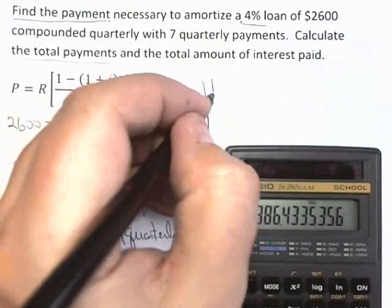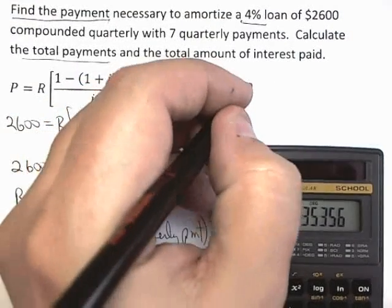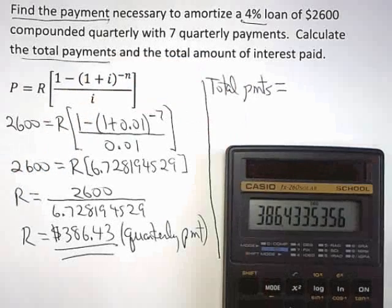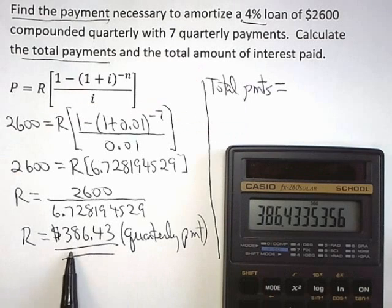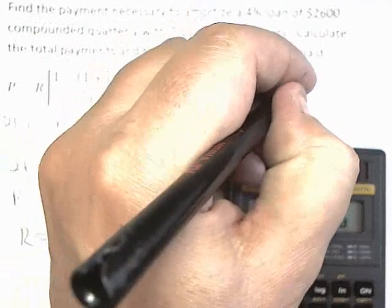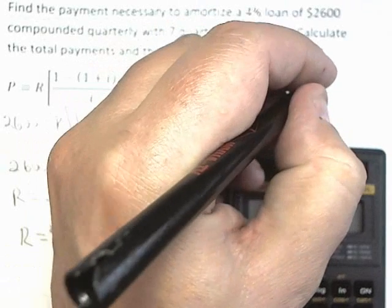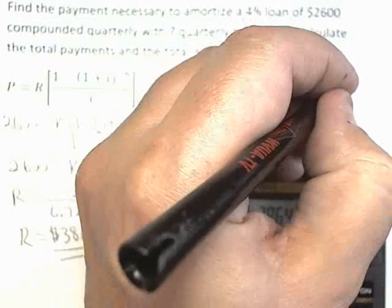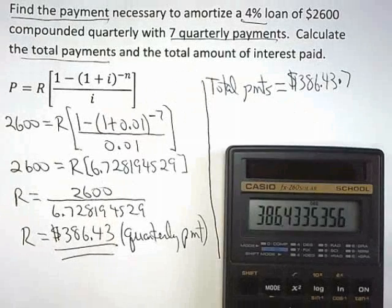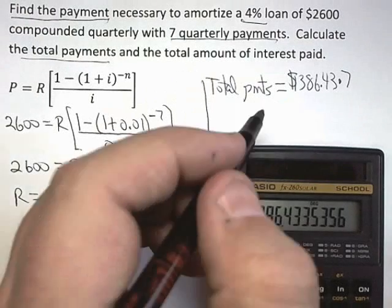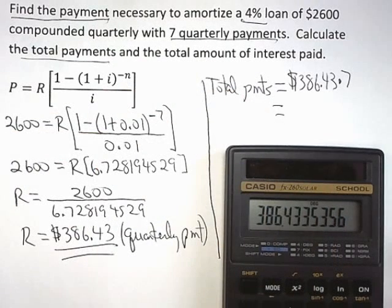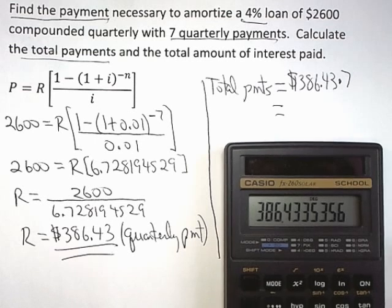Well, that's pretty simple if you just think about what they are asking you. The total payments are nothing more than how much you paid in. Well, I just calculated that I was paying $386.43 every quarter. So if I paid $386.43 each quarter, and I did it for a total of seven quarters, then the product of those two numbers would be what I'm looking for. So the total payments, if you do that on the calculator, comes out to be... Oh, here's another little hint.